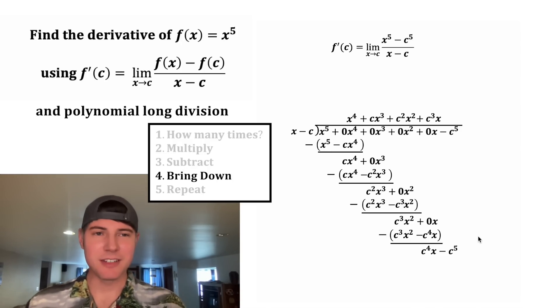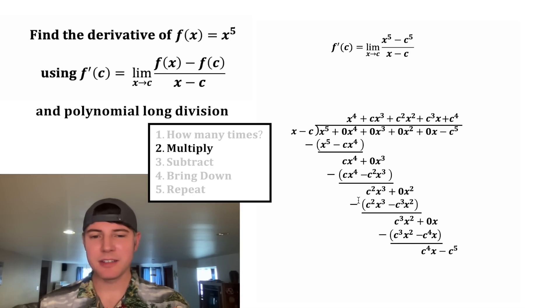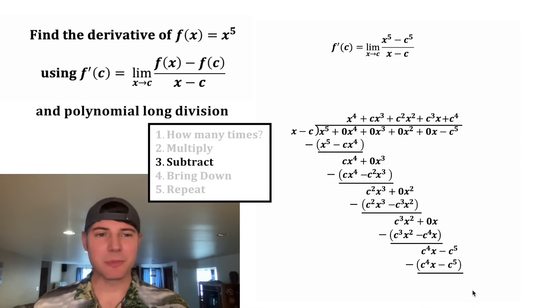And now we can bring down the negative c^5. How many times will x go into c^4x? That'll be positive c^4. c^4 times x is equal to c^4x. And c^4 times negative c is negative c^5. And now we can subtract this. c^4x minus c^4x is 0. And negative c^5 minus negative c^5 is also 0. So we have no remainder. That means this divided evenly.